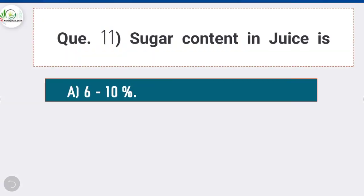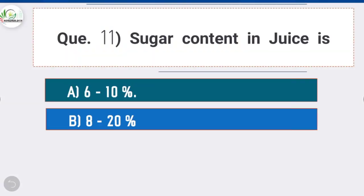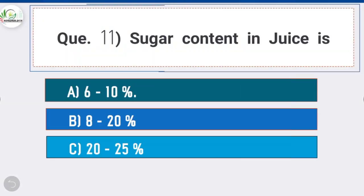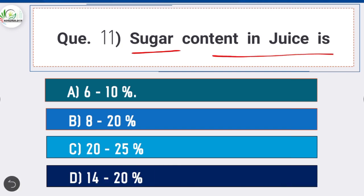Question 11: Sugar content in juice is — option A is correct: 6 to 10%. The sugar content in sugarcane juice is 6 to 10%.